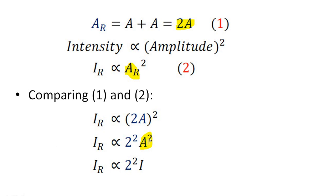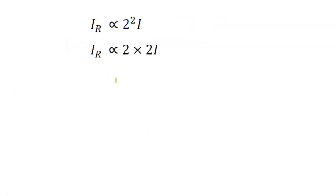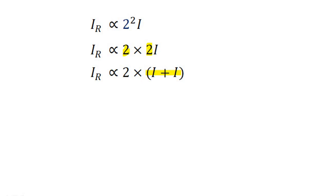Since intensity is proportional to the square of the amplitude, we can replace A² by I. So 2 squared becomes 2 × 2, and 2I can be written as I plus I. Therefore IR is proportional to 2 times (I plus I).